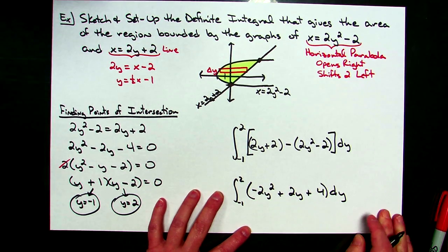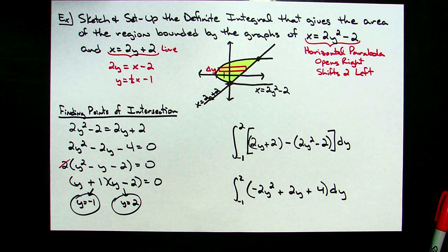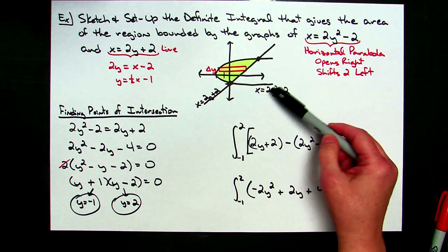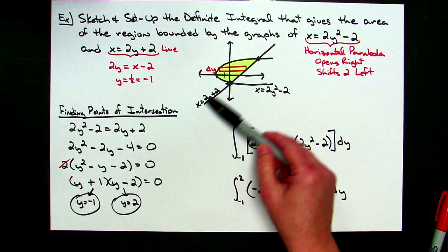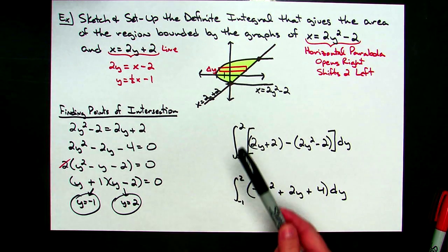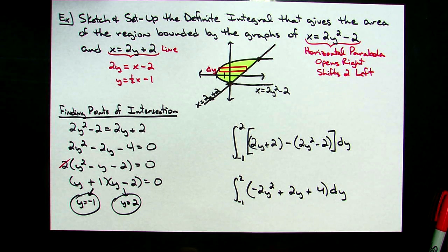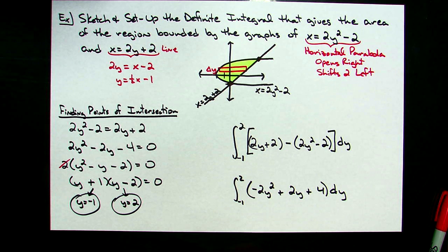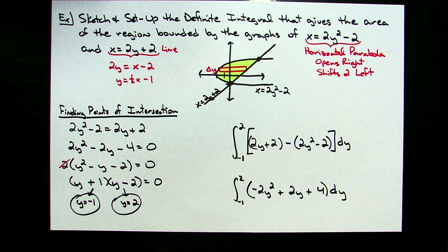So those are two quick examples of sketching and setting up your definite integral. When you sketch, I'd highly recommend labeling each curve and putting in that representative rectangle. Later on when we look at volume, we're really going to need to know about that representative rectangle, so get in the habit now while doing area between two curves — it'll make things a lot easier later.